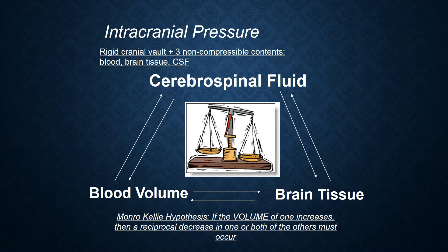To explain this, we use what's called the Monroe-Kelly hypothesis. This hypothesis states that if the volume of one of these three things increases — the brain, the blood, or the CSF — then one or both of the other two must decrease. For example, your patient has kidney failure and they miss dialysis, so they are hypervolemic. Their blood volume is increased so much that it starts to increase the pressure in their cranium. Because we have too much blood in the cranium, typically the easiest and quickest way for the brain to accommodate is to displace some of the cerebral spinal fluid into the subarachnoid spaces. So the CSF was able to compensate for this extra blood volume that caused an increase in intracranial pressure.